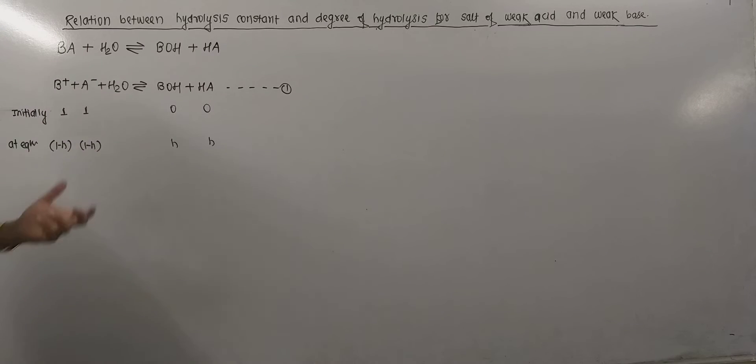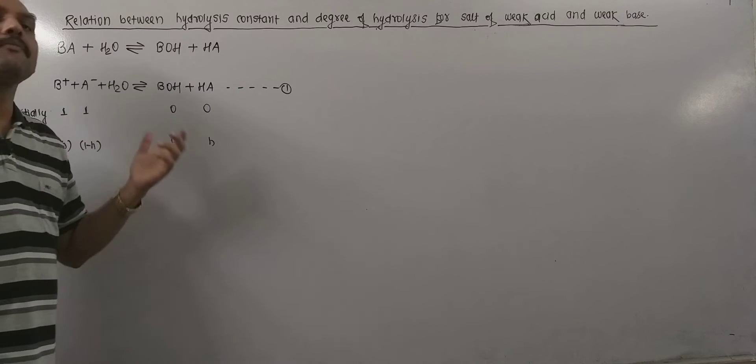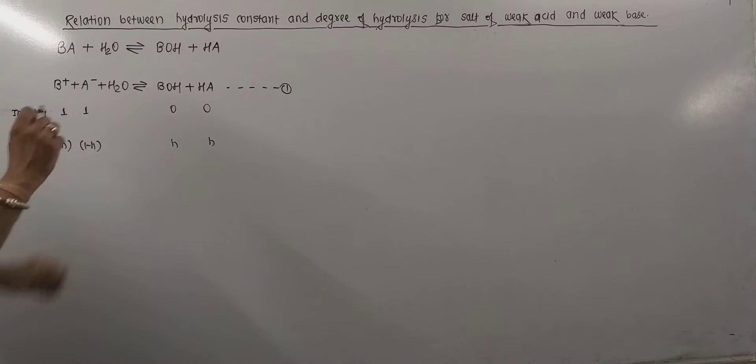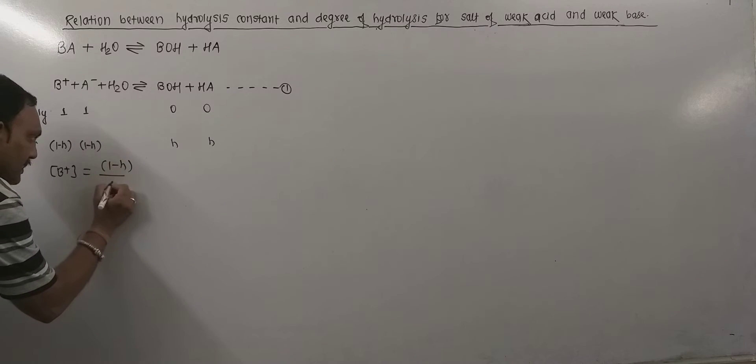Now these things—B+, A-, BOH, and HA—are present in V liter of water. Thus the concentration of these ingredients: concentration of B+ will be equal to (1-H)/V.